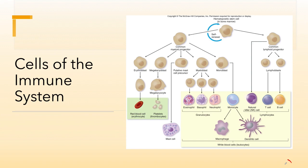These hematopoietic stem cells are self-renewing. They are sometimes known as adult stem cells. These cells can self-renew, and when they divide through mitosis, one will become a progenitor cell and the other will remain a hematopoietic stem cell. They self-renew particularly because we have to produce blood cells our entire lives.